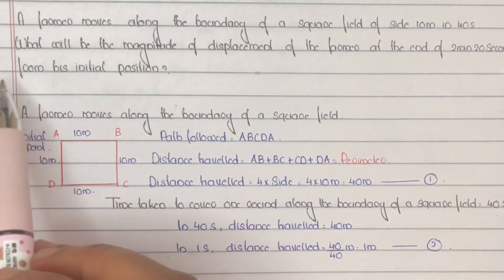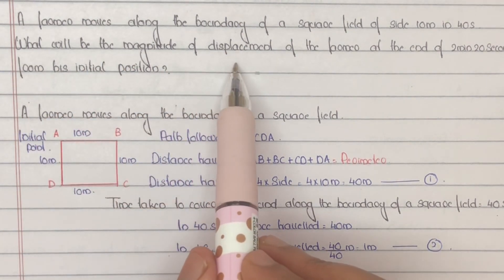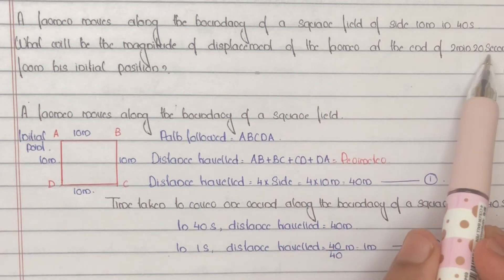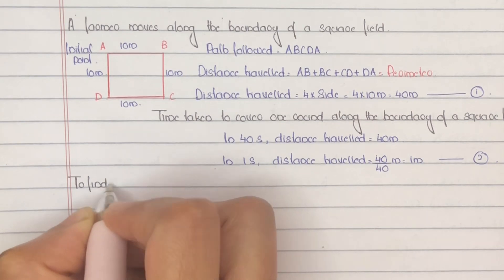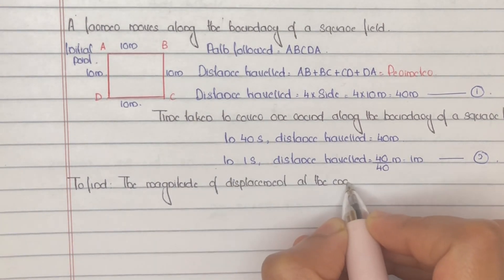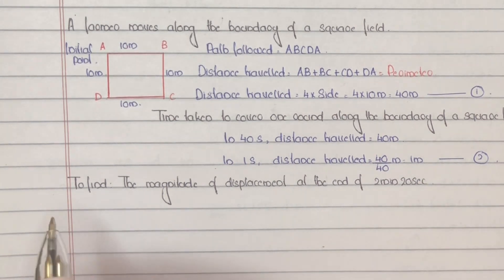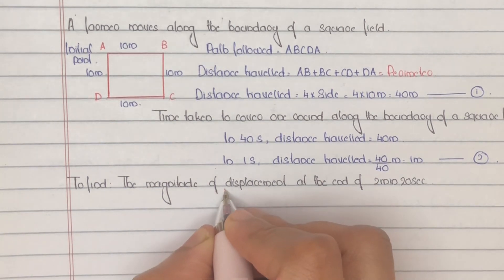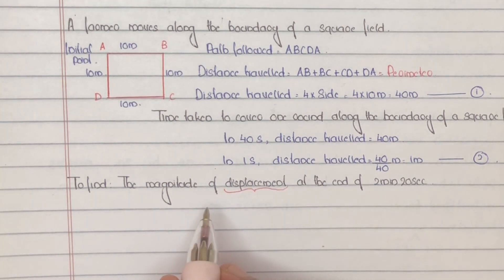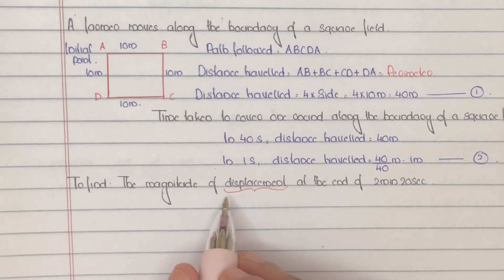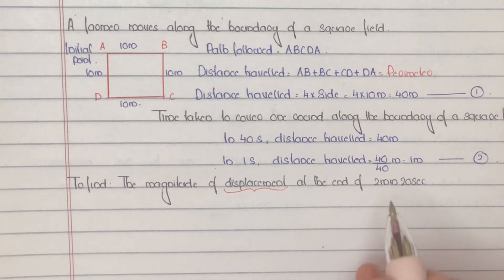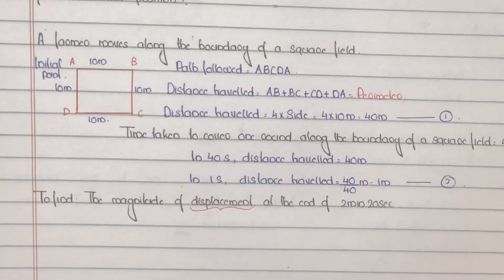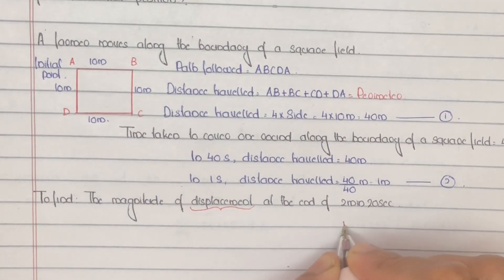The question is to find the magnitude of displacement of the farmer at the end of 2 minutes 20 seconds. To find displacement, we first find the distance travelled, which gives the actual length covered. The given time period is 2 minutes 20 seconds, so we convert this to seconds.